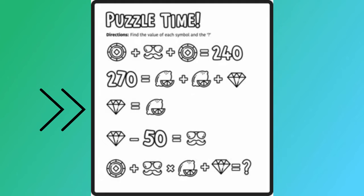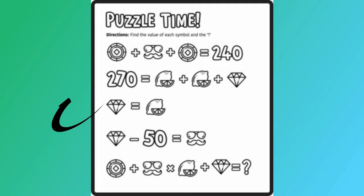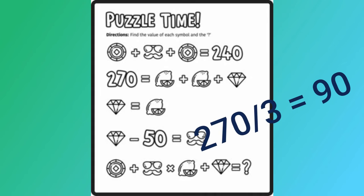Diamond equals citrus fruit. Now that is something that is useful, because if I know the diamond is the exact same as the citrus fruit, and I go back to the line above it, the 270 equals citrus fruit plus citrus fruit plus diamond. I can divide 270 by 3 because I know the diamond and the citrus fruit are the same.